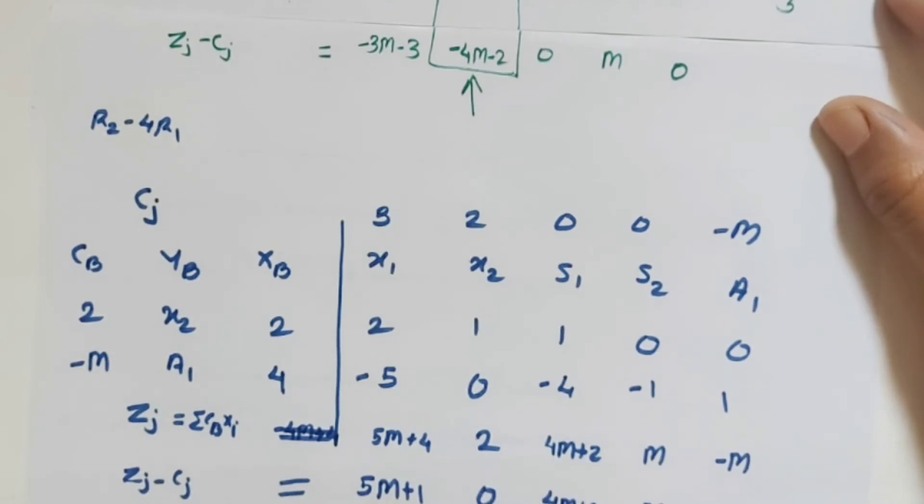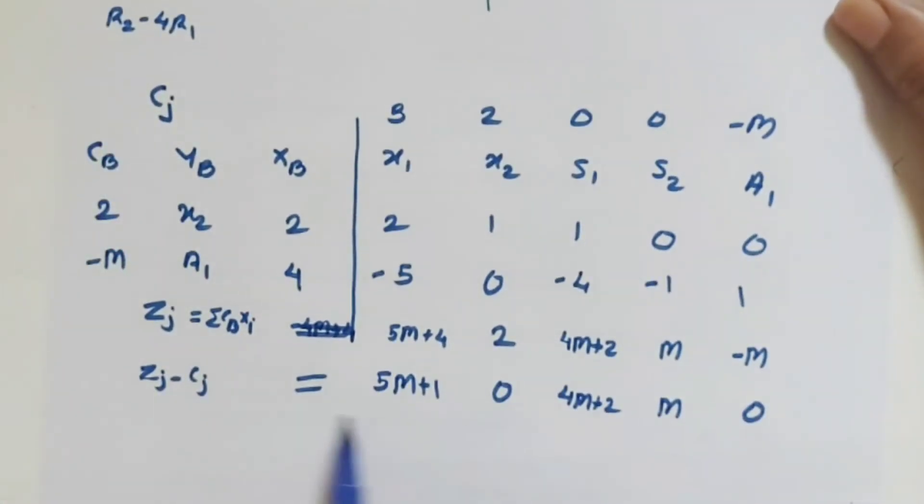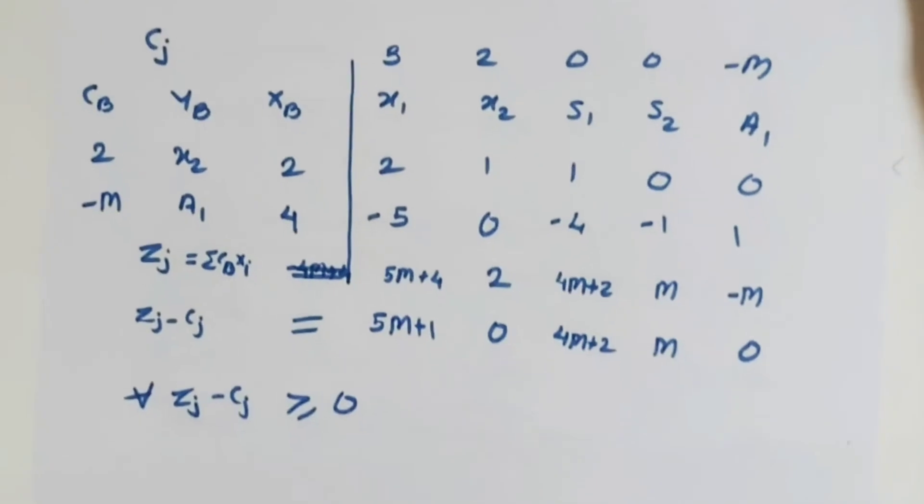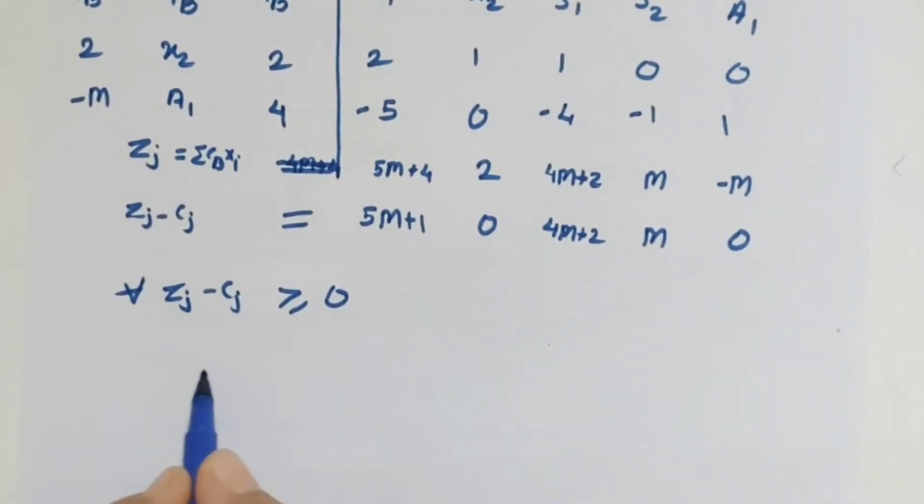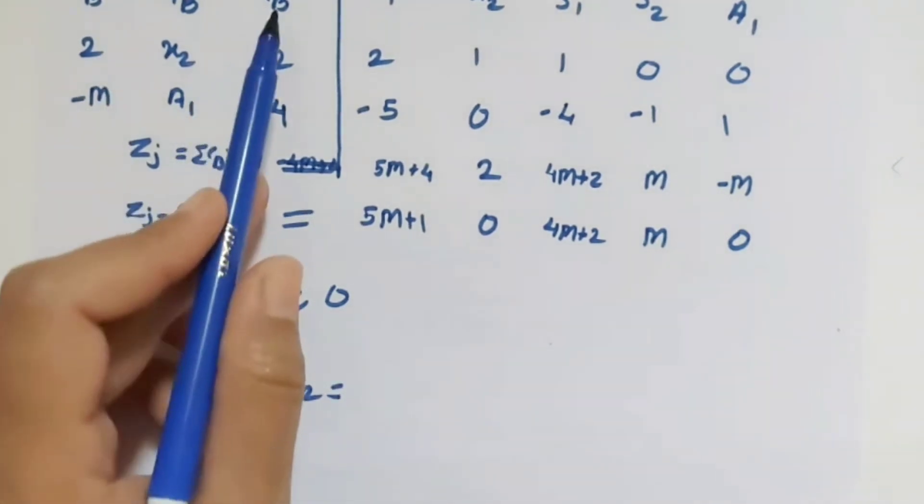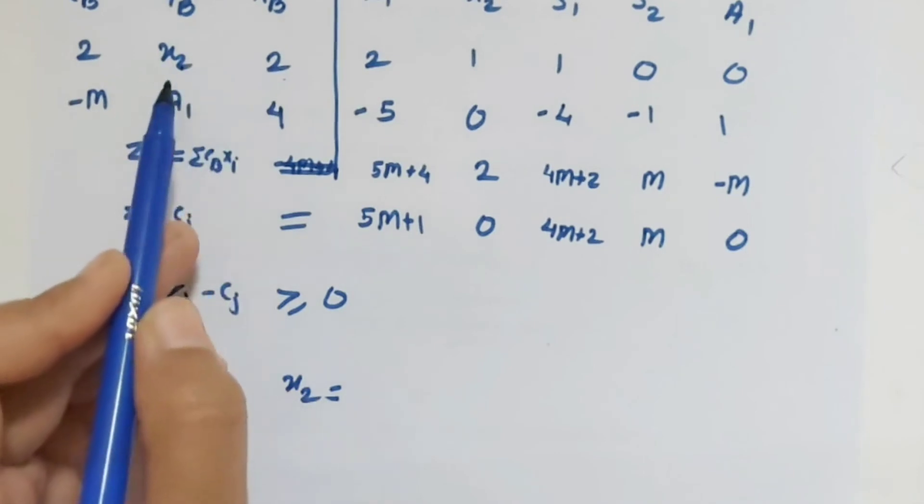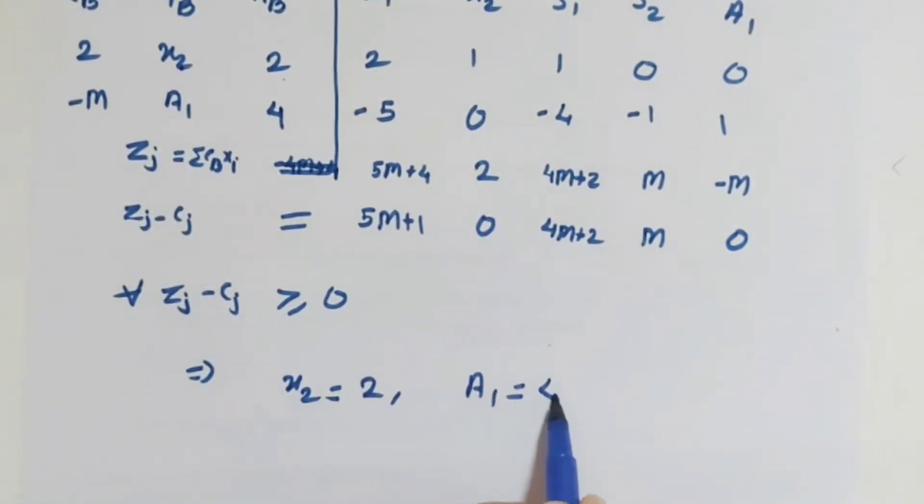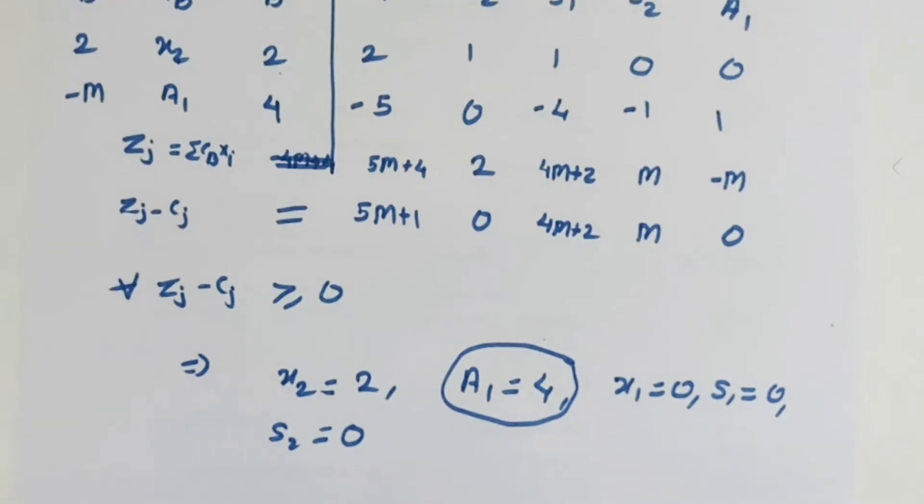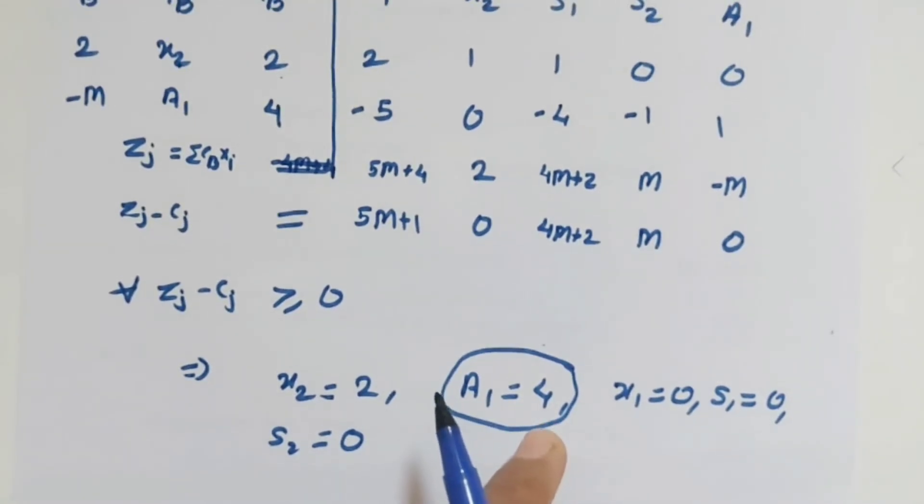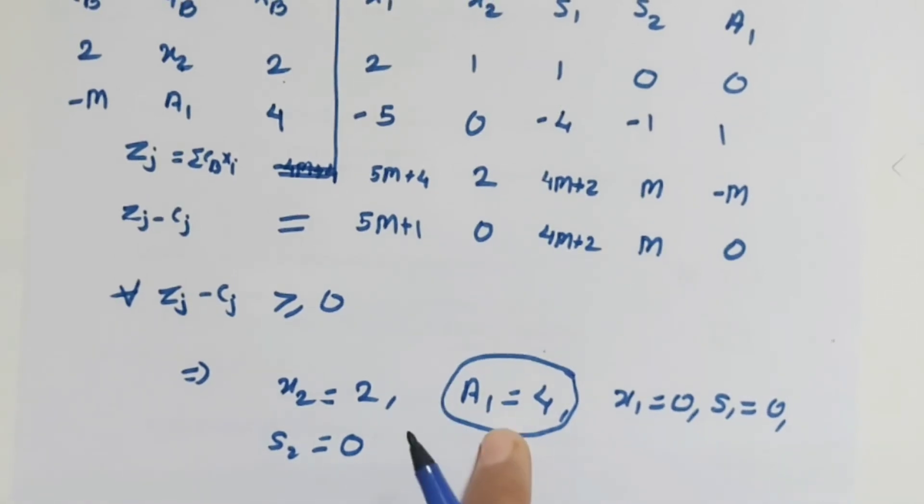So here I think there is no quantity negative. All zj minus cj are greater than or equals to 0. This is greater than or equals to 0, so this is our final solution. As per this, this implies x2 equals to - this is our solution - corresponding to this basic variable x2 equals 2, a1 equals 4, x1 is 0, s1 is 0, and s2 is 0. After getting this, we are still saying solution does not exist. Why? Because artificial variable exists and at a non-zero level. If its value is 0, then there is no problem. But if this non-zero exists, then artificial exists.